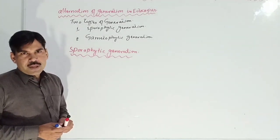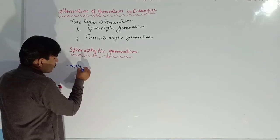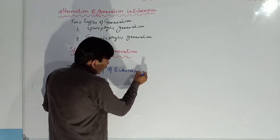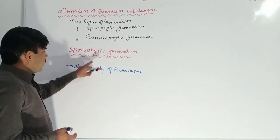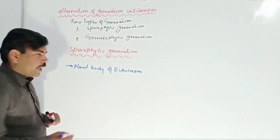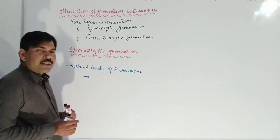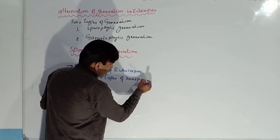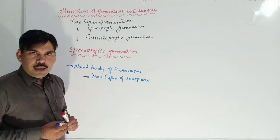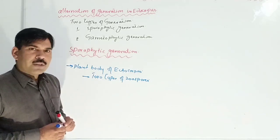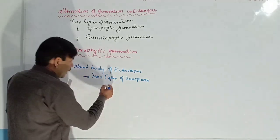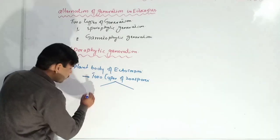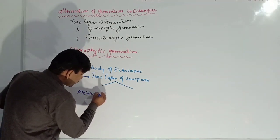First, we will discuss the sporophytic generation. This sporophytic generation is produced through the plant body of Ectocarpus. This plant body gives rise to two types of zoospores. The question is: which types of zoospores are produced through the plant body of Ectocarpus that are involved in the formation of the sporophyte? The first type of zoospores are known as meozoospores.